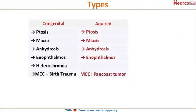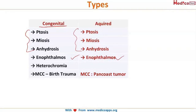There are two types of Horner's syndrome: congenital and acquired. The three components — ptosis, miosis, and anhydrosis — along with enophthalmos, are invariable in both. However, the striking difference in congenital Horner's syndrome is iris heterochromia: one eye has one color and the other has a different color. This is the key differentiating point between congenital and acquired Horner's syndrome.